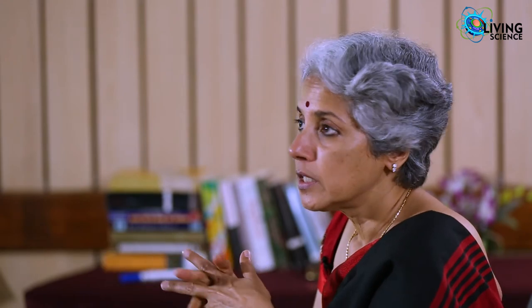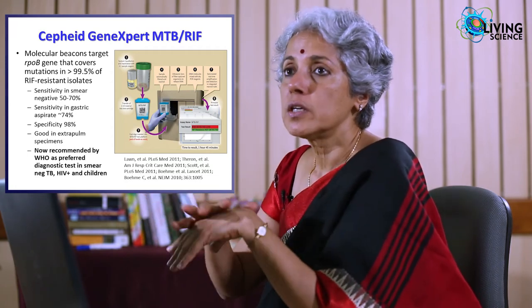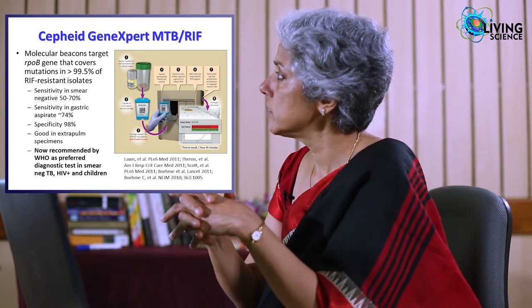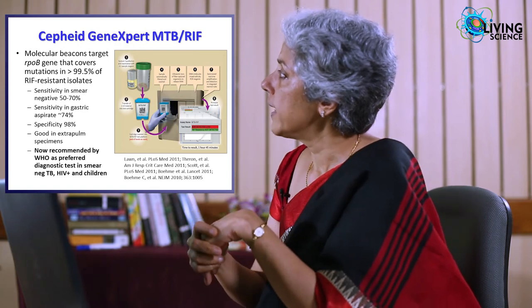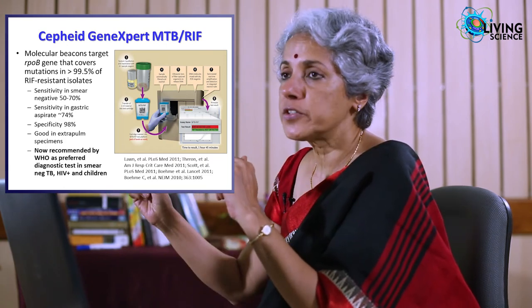For many years we used smear microscopy developed by Robert Koch 120–130 years ago, and we were still using it in the 21st century. There was no standardized PCR — different labs got different results. The GeneXpert is a cartridge-based nucleic acid amplification test: you put the sample into the cartridge, the lab technician does minimal handling, and in 90 minutes you get a result for both TB detection and rifampicin resistance, because it targets the rpoB gene where resistance mutations occur.